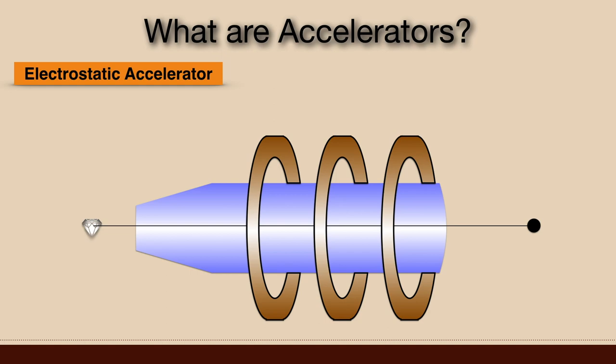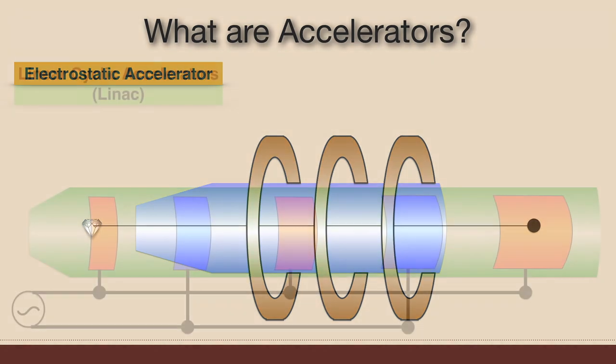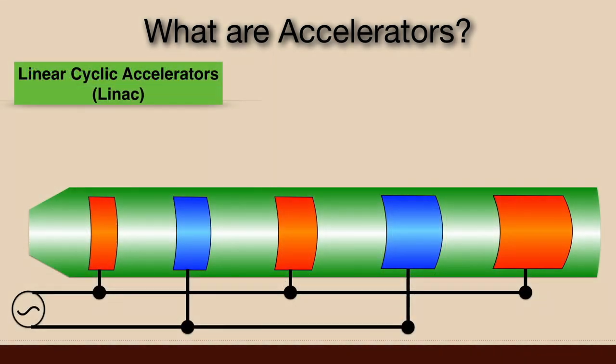This device can increase the energy of the particle to a certain limit only. Next comes linear cyclic accelerator or LINAC. LINAC is again a long vacuum tube which is having a number of alternate electrodes, and these electrodes are connected with an oscillator. This oscillator generates the electrostatic force between the electrodes.